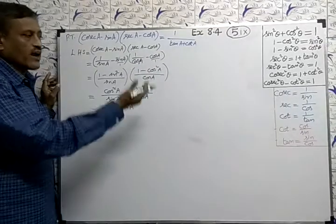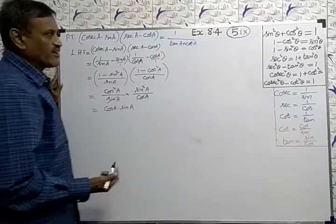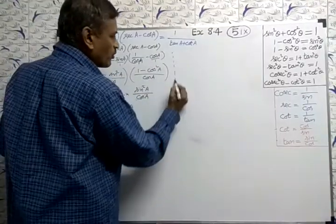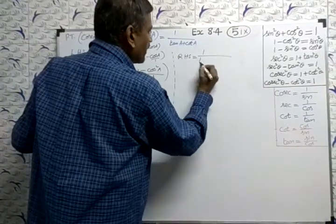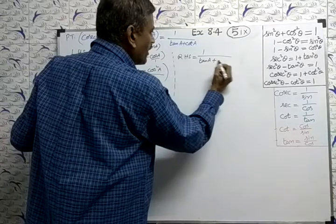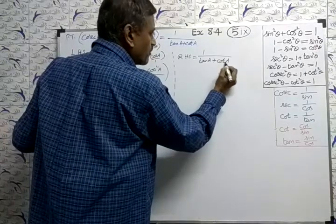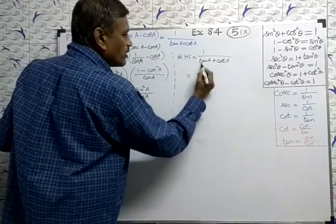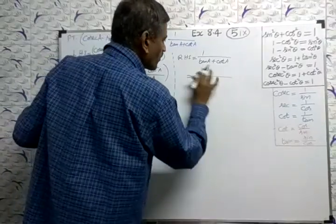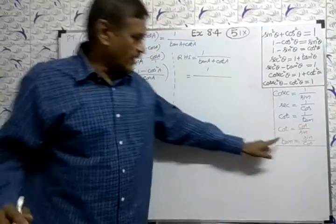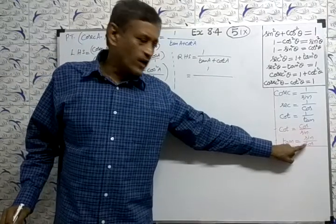So, we cannot get from here to this answer. So, we are going RHS separately and we can find the answer. RHS I am doing separate here. RHS equal to 1 by tan A plus cot A. Now, equal to 1 by tan A equal to what? Tan A equal to sin by cos.